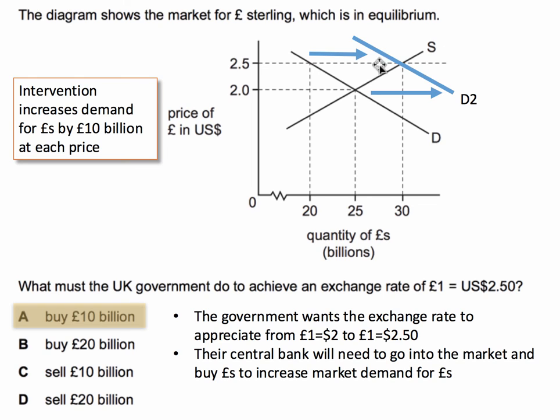We've shifted the demand out by ten billion pounds at each price level — that's the scale of the intervention required to nudge the equilibrium value of the pound up to two dollars fifty. Hence the answer to this question is A.